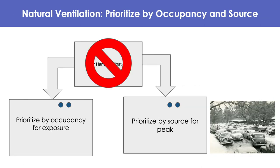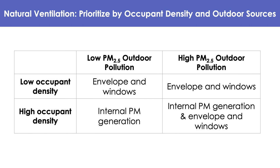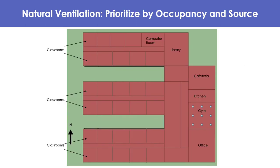For naturally ventilated buildings, there is no air handler effectiveness strategy. Instead, we prioritize goals by occupancy or PM 2.5 source. There are two common goals: measuring the infiltration factor of PM through a classroom's envelope and windows, or measuring for internal PM generation or human contribution. For natural ventilation, we must assume that the level and frequency of opening doors and windows is the same throughout the school. Here is a PNNL prototype layout of a primary school as an example.